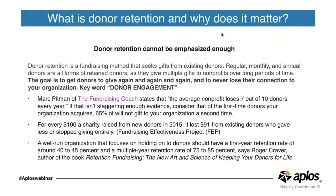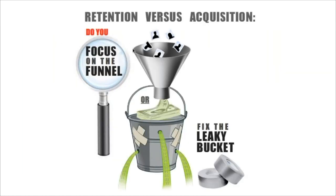For every hundred dollars a charity raised from new donors in 2015, it lost 91 dollars from existing donors. The Fundraising Effectiveness Project — also known as FEP — is a great resource to look into. A well-run organization focused on holding on to donors should have a first-year retention rate of around 40 to 45 percent and a multiple-year retention rate of 75 to 85 percent, according to retention fundraising expert Roger Craver.